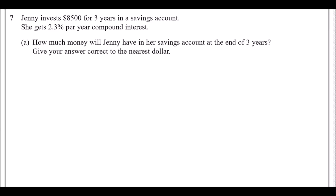Jenny invests eight thousand five hundred dollars for three years in a savings account. She gets 2.3% per year compound interest, meaning the money increases every single year by 2.3%, compounded every year. How much will she have at the end of three years? This is just a straightforward formula.